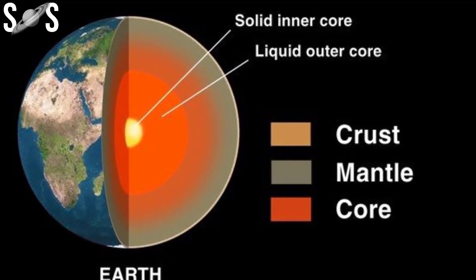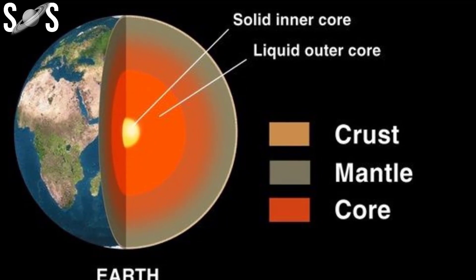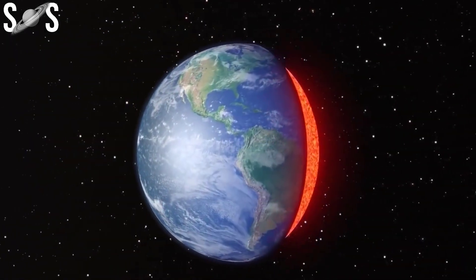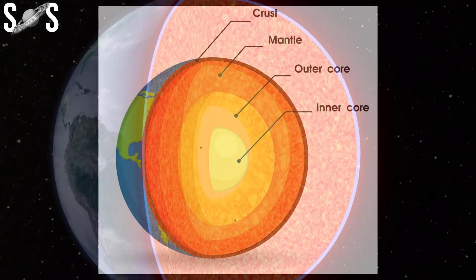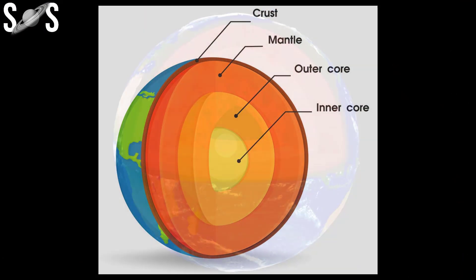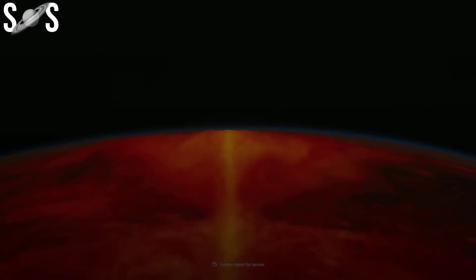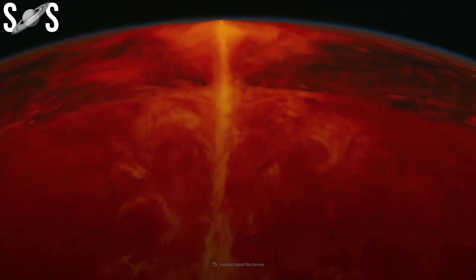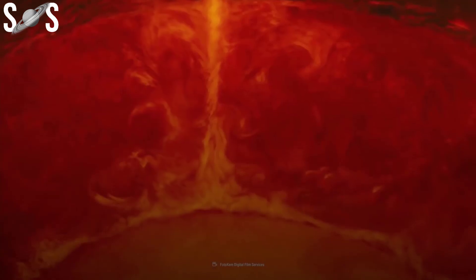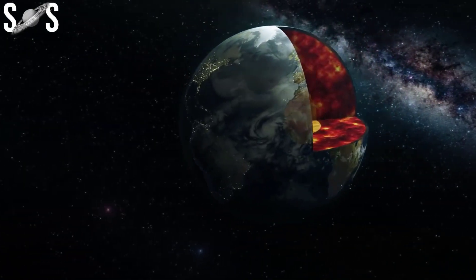Exactly how the inner core rotates has been a matter of debate between scientists, and the latest research is expected to prove controversial. What little we know about the inner core comes from measuring the tiny differences in seismic waves, created by earthquakes or sometimes nuclear explosions, as they pass through the middle of the Earth.